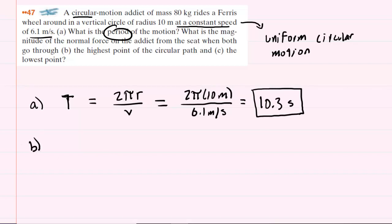In part B, we are asked to find the normal force exerted on the addict from the seat. And to do that, it will be helpful to draw a free body diagram. So here is the circular path. The person is located in part B at the top of the circular path. There are two forces acting on him.